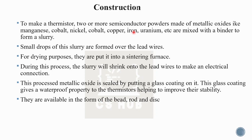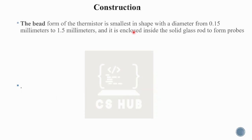Cobalt, iron, manganese, and metallic oxide powders are mixed into a slurry. This slurry fixes the lead wires. It dries, and glass protection is applied to protect stability and make it waterproof. The bead form is the smallest shape, with a diameter of 1.5 mm, enclosed in a solid glass rod.